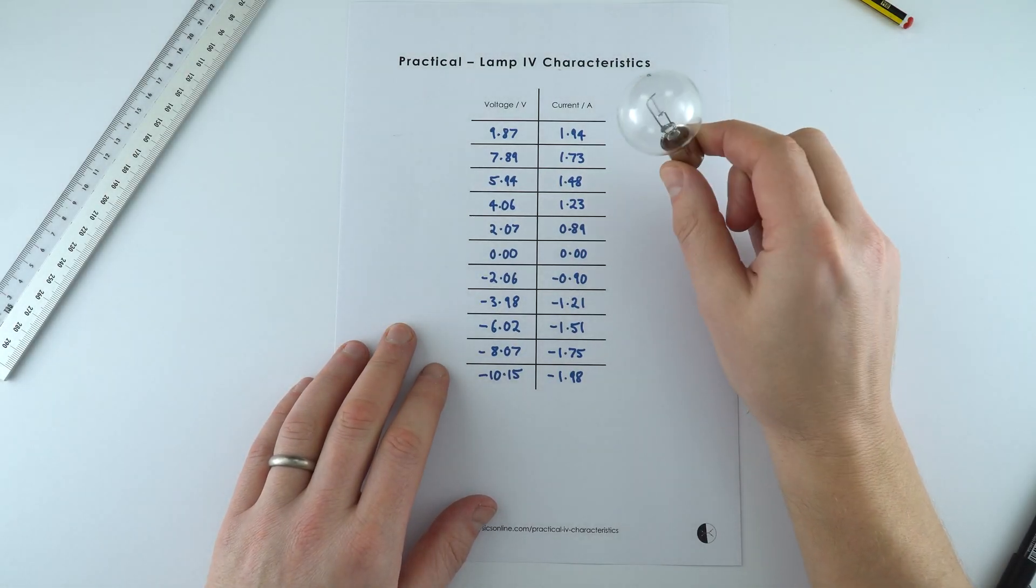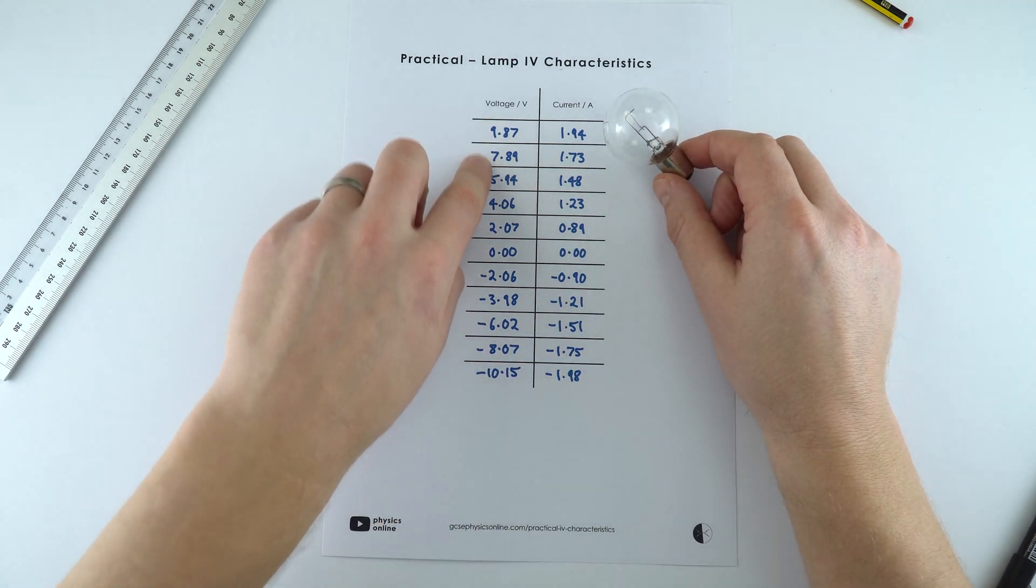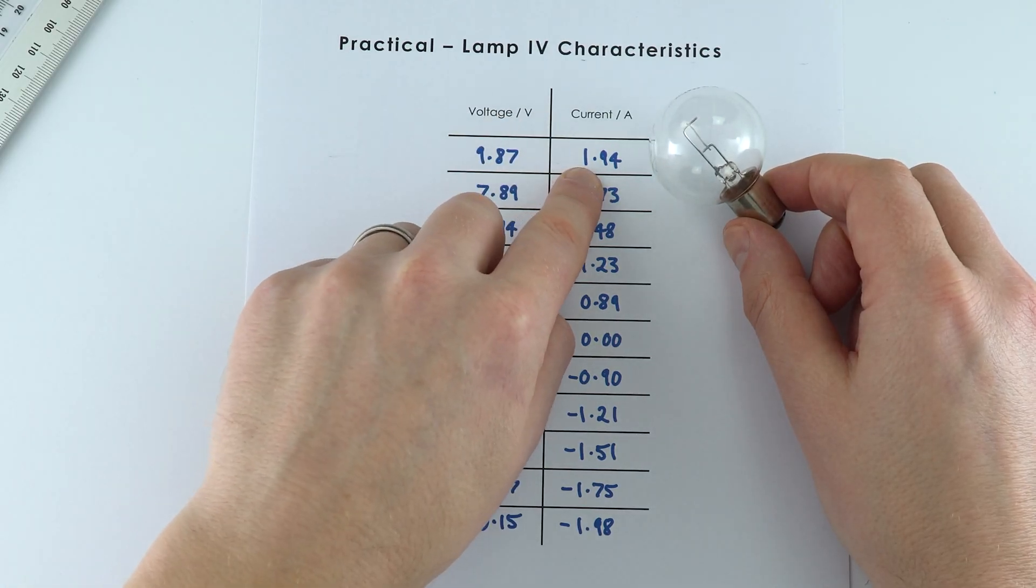So this is the data I took when I looked at a filament lamp. We've got these values for voltage or potential difference and these currents as well.